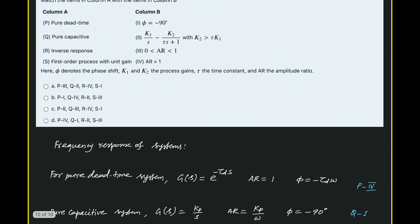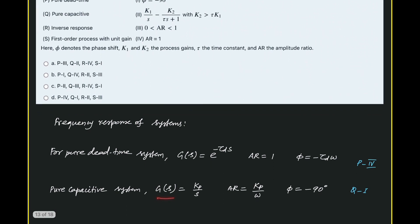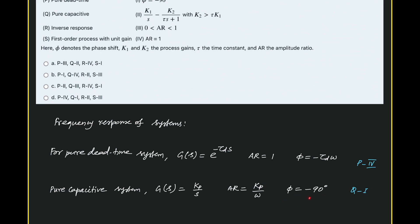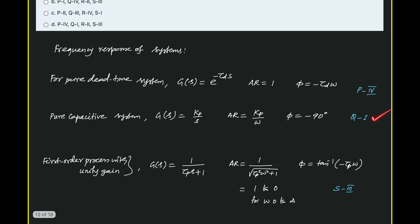Next is the pure capacitive process. For a pure capacitive system, g(s) = kp / s, and AR is given as kp / omega, and phase angle equals minus 90, which is a constant. So phase angle of minus 90 matches the pure capacitive system. Therefore Q and 1 are matching.